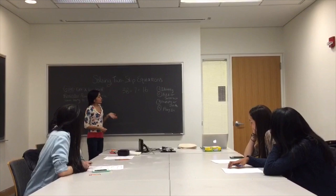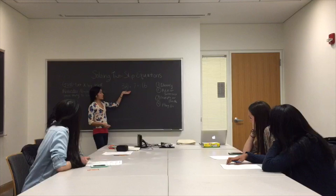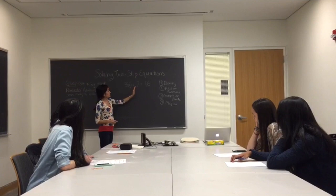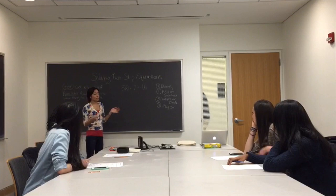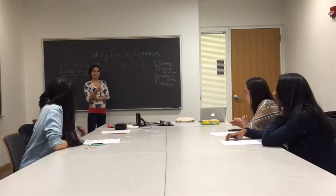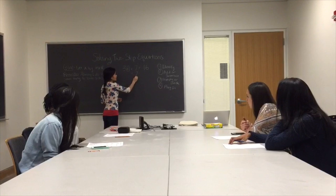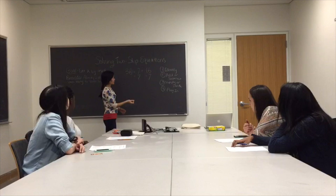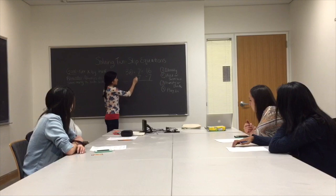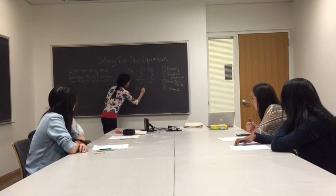Looking back at our goal, it is to get x by itself. Step two is add or subtract. On the left side, x is not by itself because there's a 3 and a 7. We need to get rid of the 7 by subtracting. What can we subtract from 7 to get 0? Really, do you have an idea? 7. Yes, if we subtract 7 from 7, we get 0. However, we have to keep in mind our reminder — always do the same thing to both sides — so we subtract 7 from the right side too. The 7s cancel, and on the right side we have 9, leaving us with 3x equals 9.